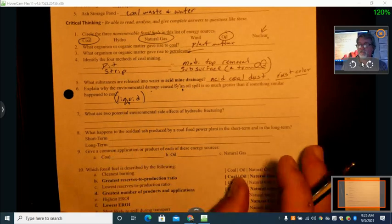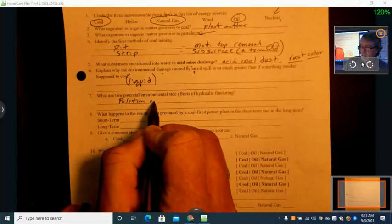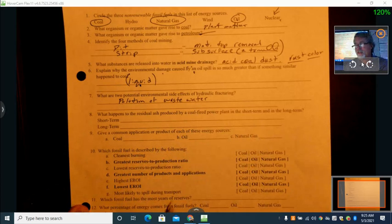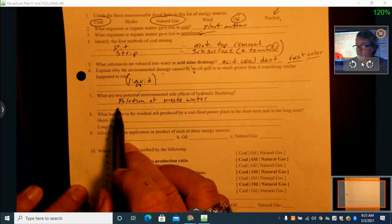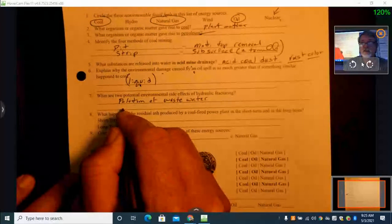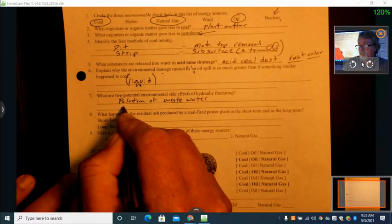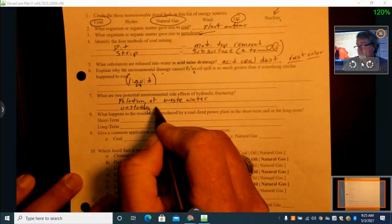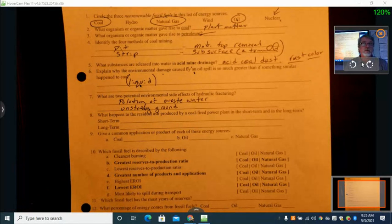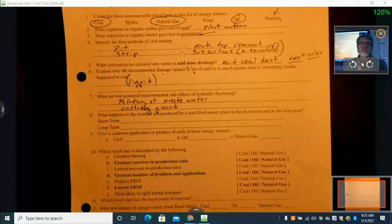What are two potential environmental side effects of hydraulic fracturing? Pollution of the waste water. The water that we've put into the ground to frack the rock comes back out and becomes a part of pollution there. The other potential is the unsteady ground. As we fracture that rock, we create areas that no longer have that good solid foundation - unsteady ground or the ground could move there. That's not the exact terminology used, but I think you get the idea.